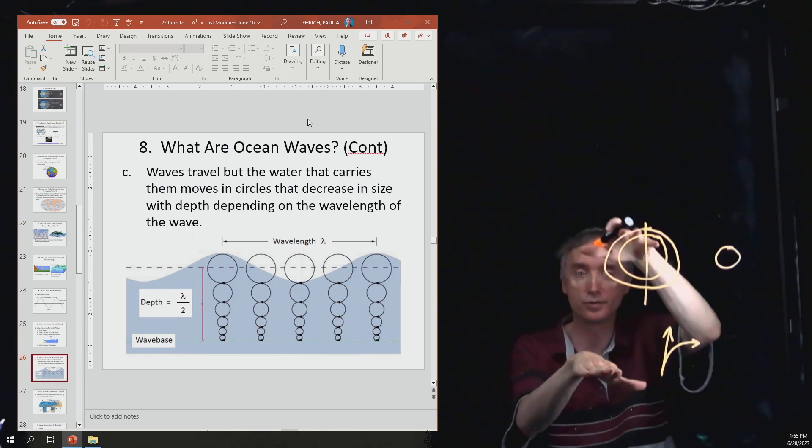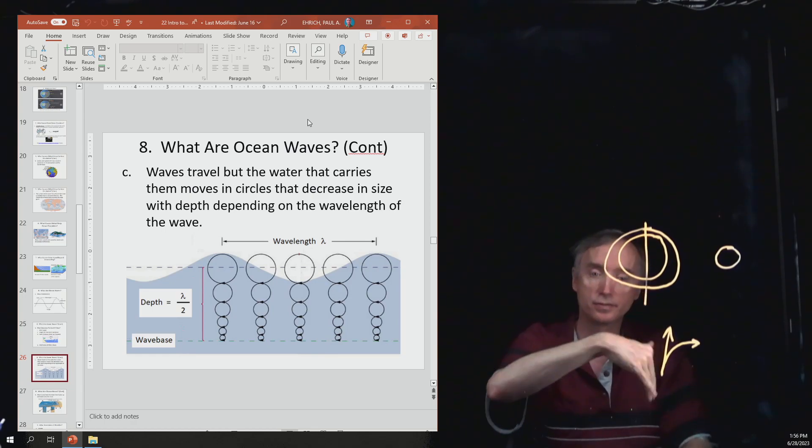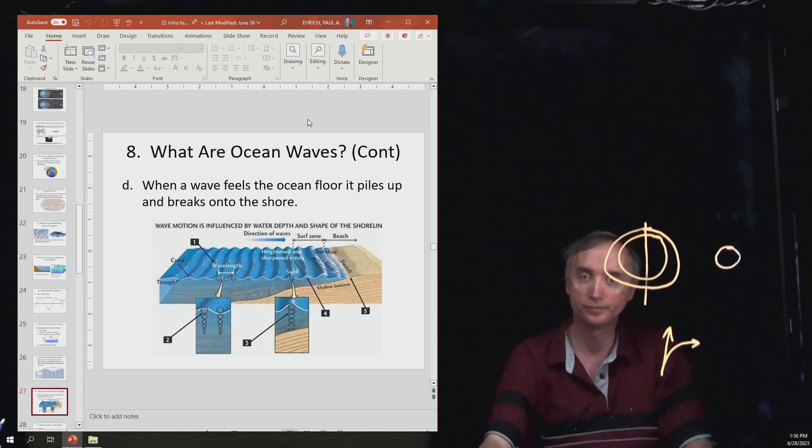And then as it gets smaller and smaller, what's going to happen is the wave is going to crest when that happens. And so that's going to make ocean waves lap onto the shoreline.